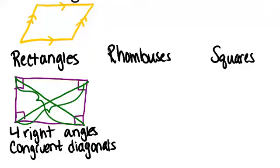Now a rhombus is a parallelogram that has four congruent sides. So it still has opposite sides parallel, it's just that all four sides are congruent.